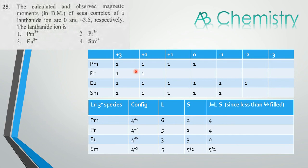Similarly, for Praseodymium, the L value is 3+2 = 5, and S value is 1/2+1/2 = 1, and 5-1 gives J value of 4.